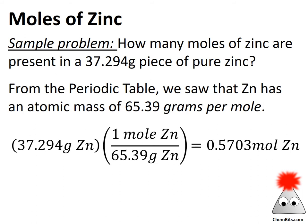Before we get too far, let's do a quick reasonableness check. If one mole of zinc has a mass of 65 grams and our sample has a mass of 37 grams, our sample has quite a bit less than one mole of zinc. Looking back at our result, sure enough, it is less than one mole of zinc, so we're in good shape.